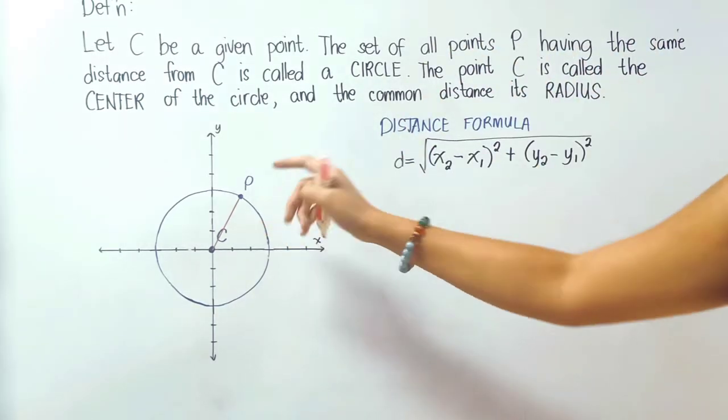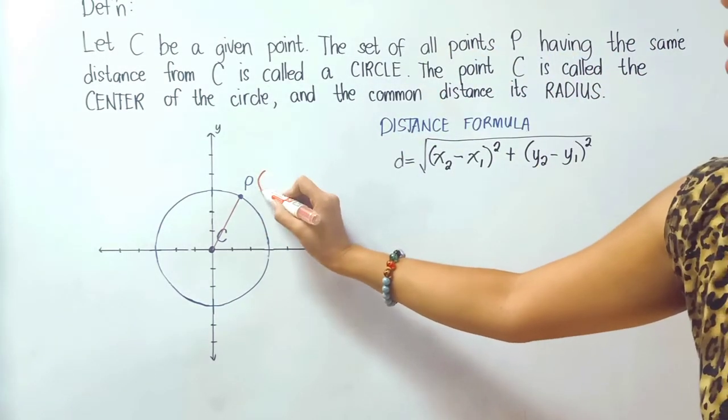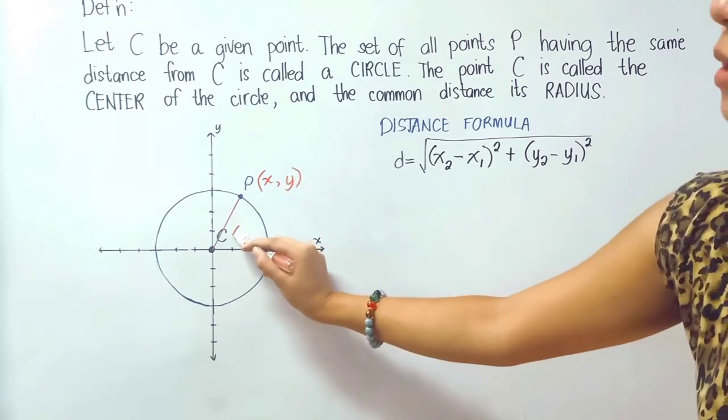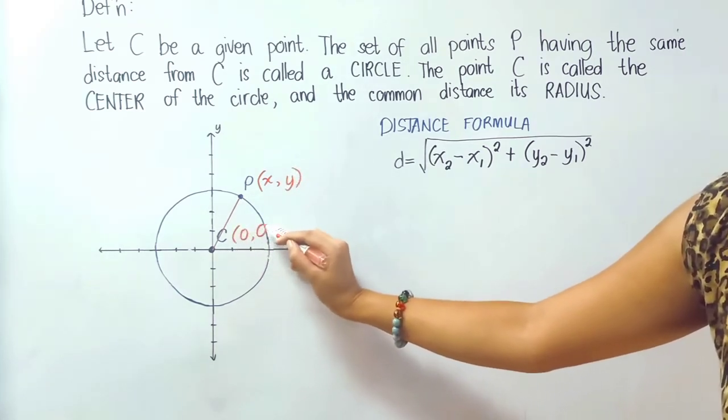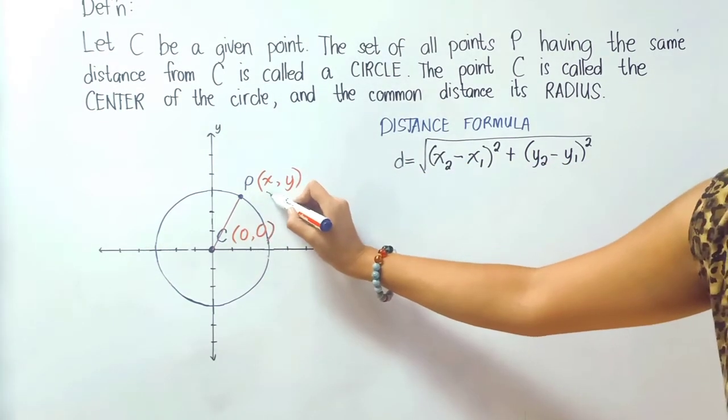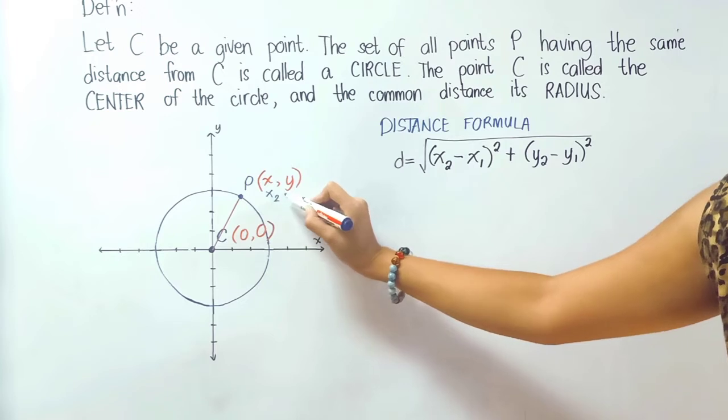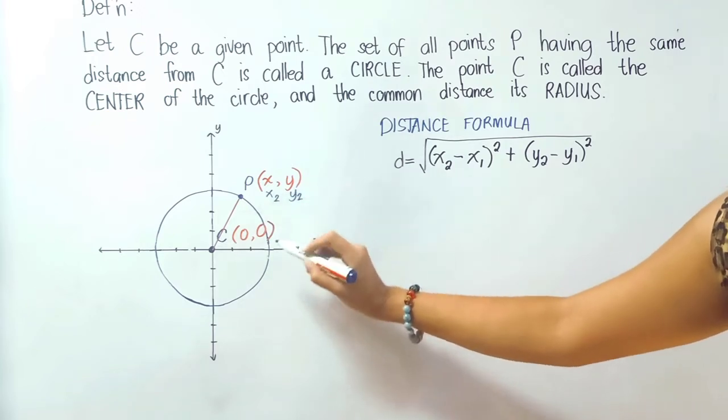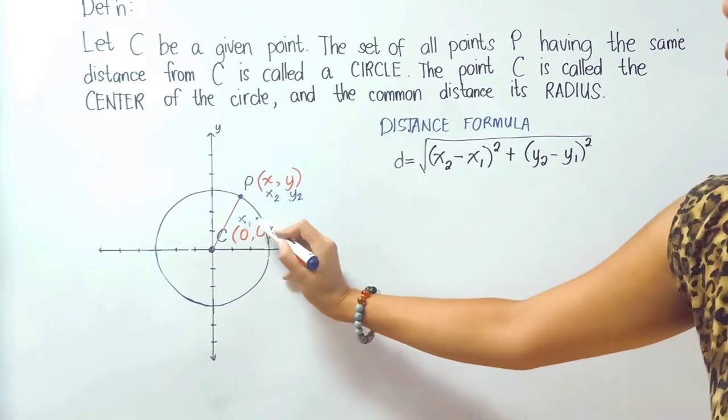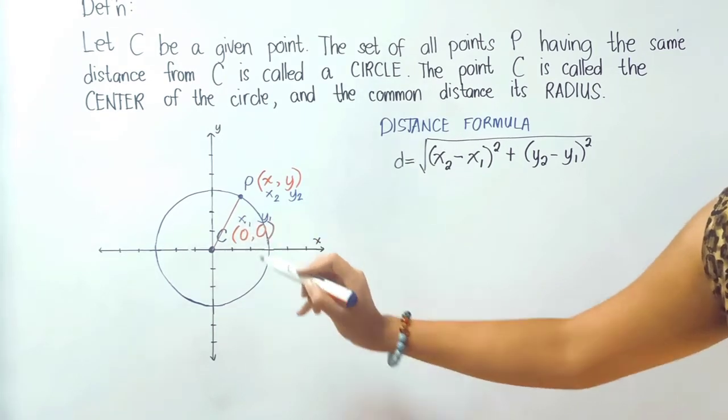Now all points just like P is an ordered pair x, y and our center is obviously in 0, 0. Now let this be our second ordered pair so it's x sub 2, y sub 2 and this one be our first ordered pair so x sub 1, y sub 1.